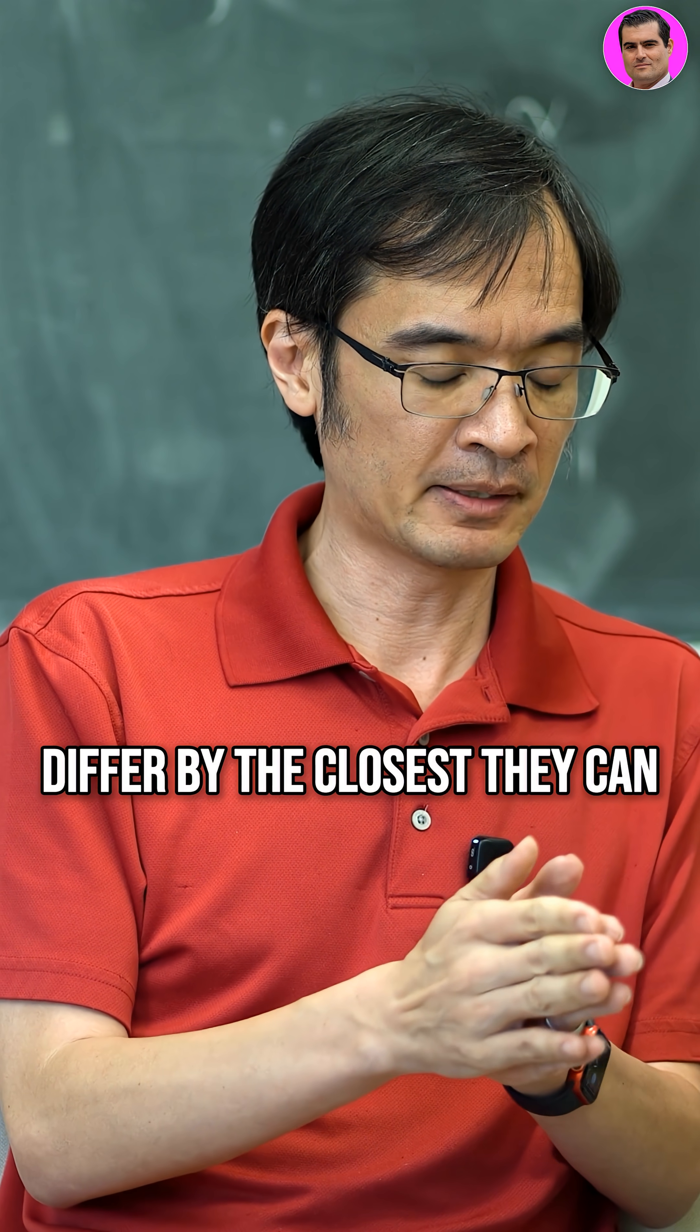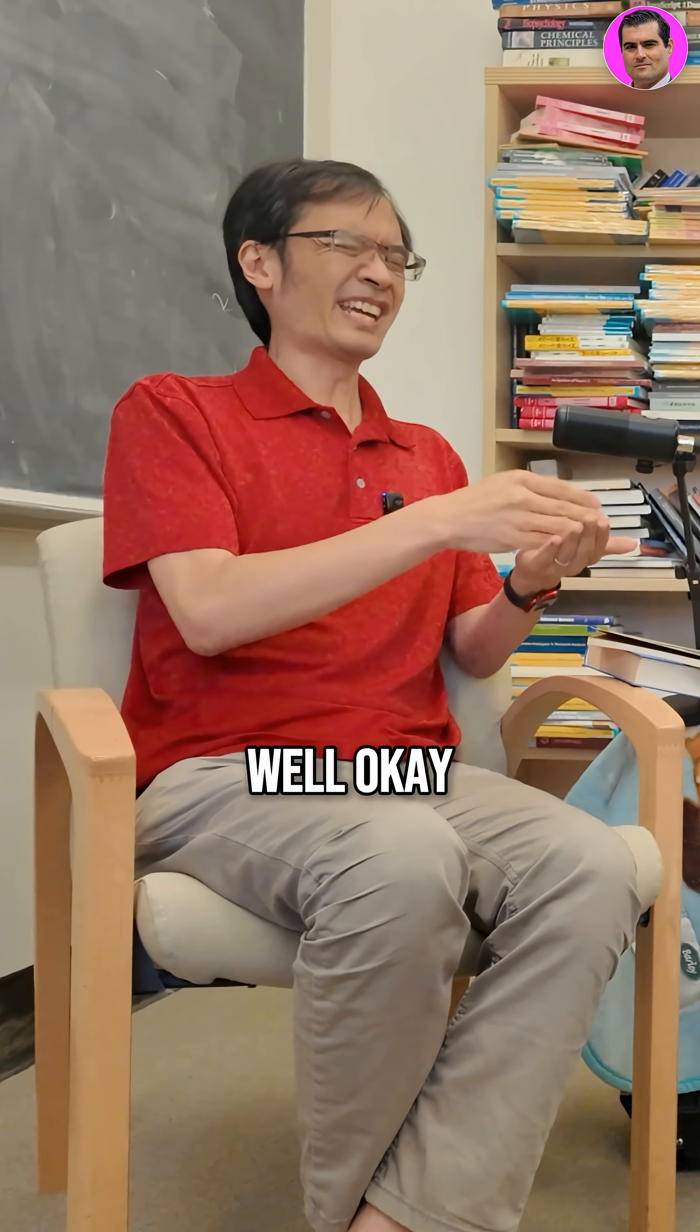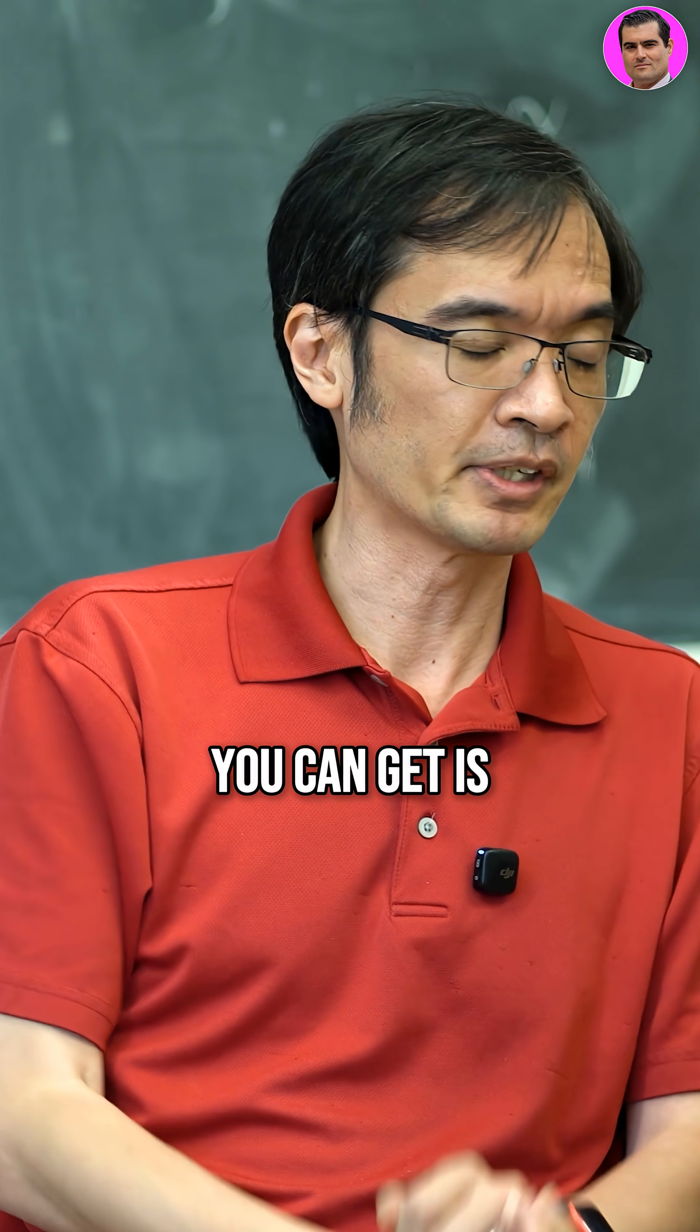So these are pairs of primes that differ by the closest they can, which is 2. For example, 11 and 13. Well, okay, 2 and 3 are closer, but after 2, all primes are odd. So the closest you can get is 2.